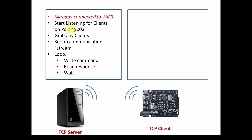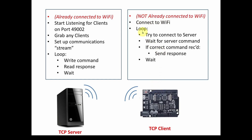On the client side, the device is not already connected to Wi-Fi, so step one is to connect to Wi-Fi using the ID and password. Then enter a loop: continually try to connect to the server, and once connected, wait for whatever command the server sends. If the client receives the correct expected command, it sends the appropriate response, then waits and repeats. That's the basic software loop for the client.